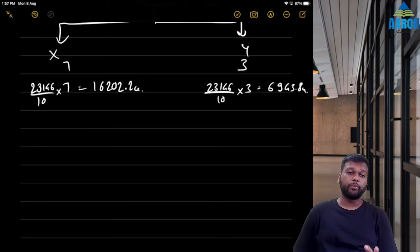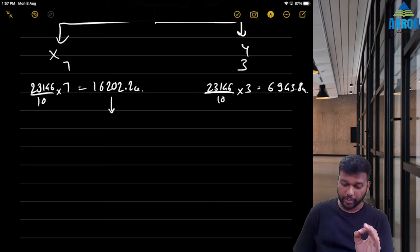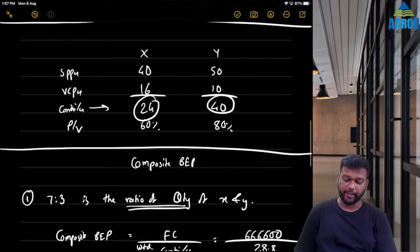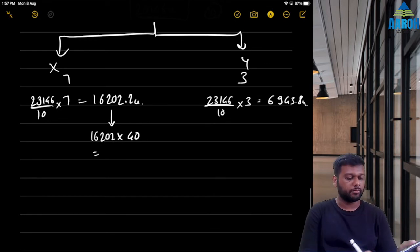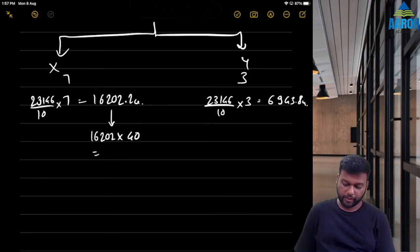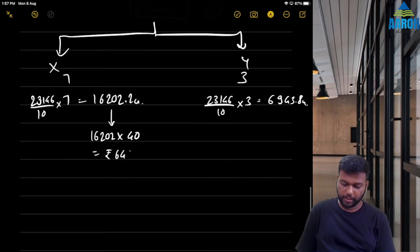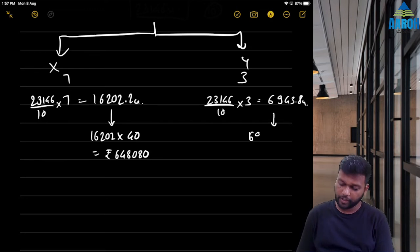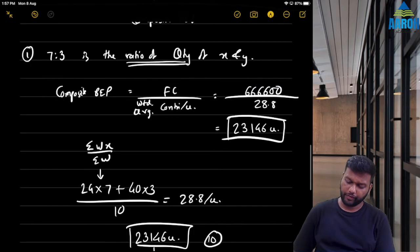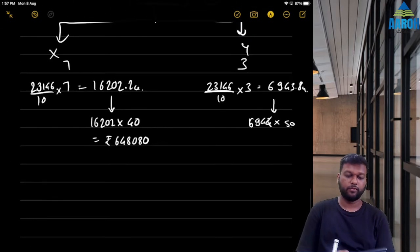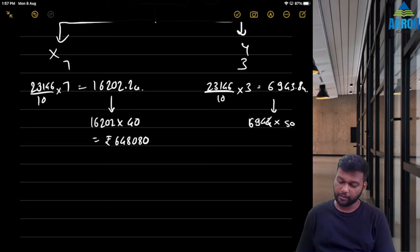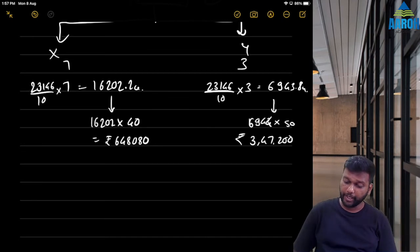Converting to rupees: BEP for X = 16,202 units × ₹40 = ₹6,48,080. BEP for Y = 6,943 units × ₹50 = ₹3,47,150 (approximately ₹3,47,200). So this is the break-even point in units and in rupees for X and Y based on the quantity mix assumption.